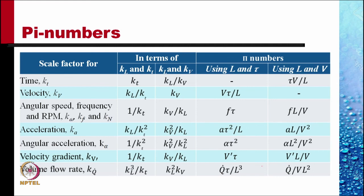We convert the relations between the various scale factors into pi numbers expressed using L and V — the length and velocity. For angular speed, frequency, and rpm, the pi number f times L divided by V must have the same value in the prototype and the model. For angular acceleration alpha, the pi number alpha times L squared divided by V squared must be the same in both flows. Every one of these pi numbers must have matching values to ensure similarity.